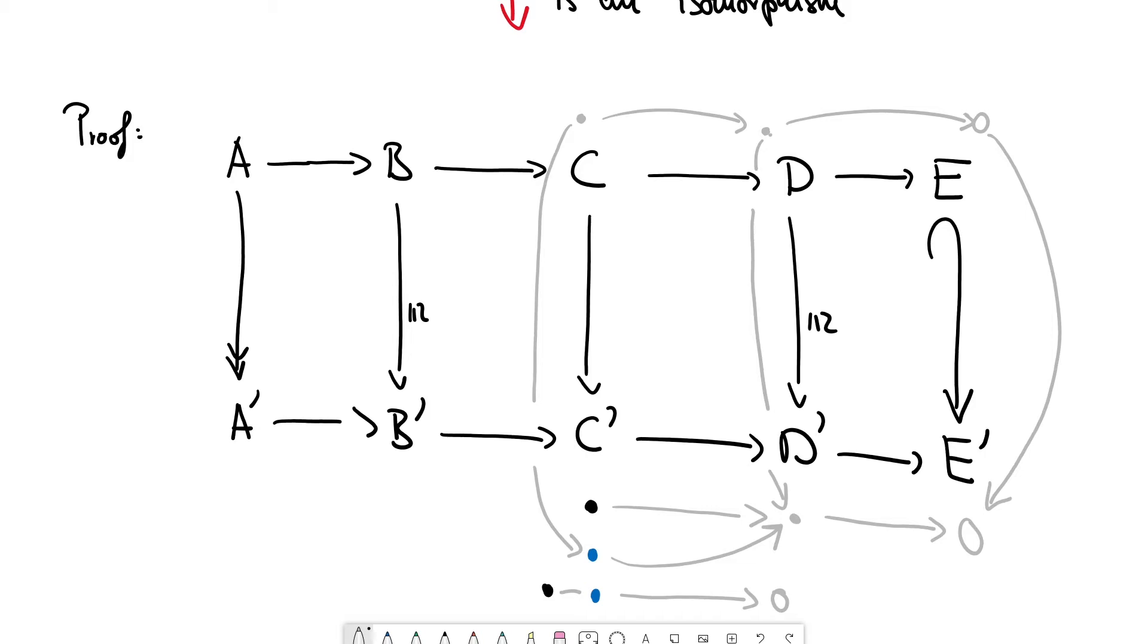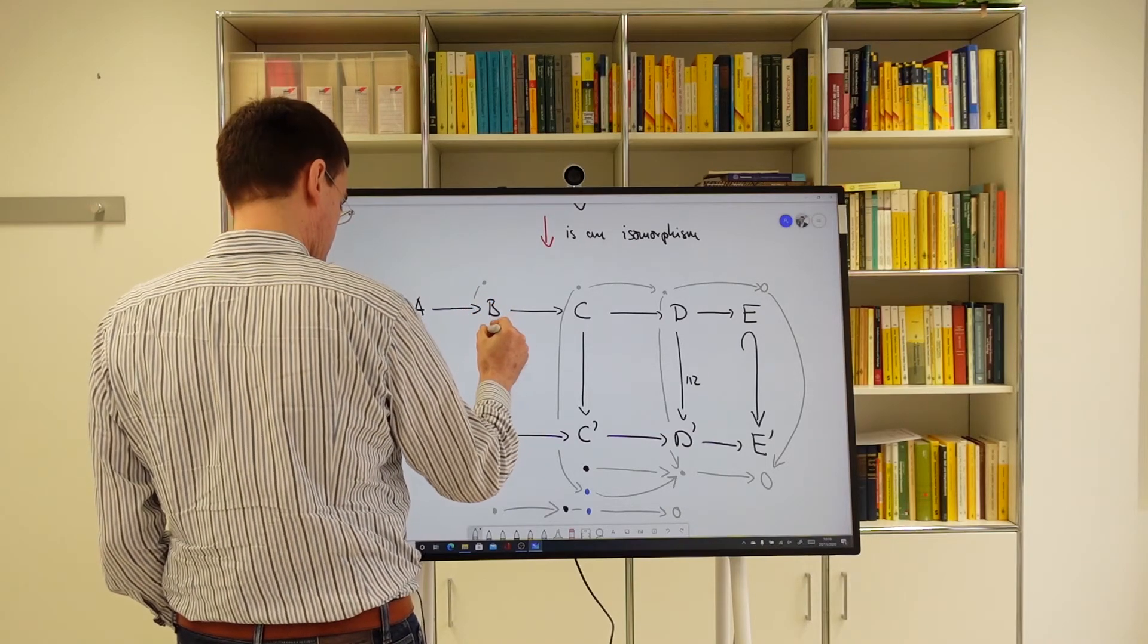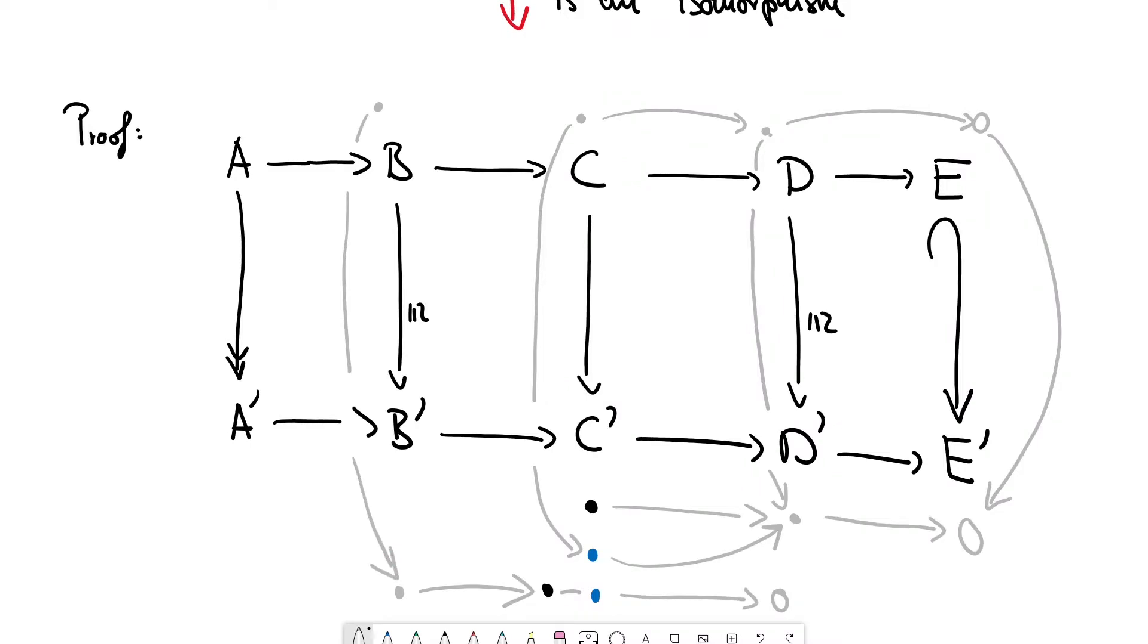And, exactness at C prime gives us an element, or says that there is an element in B prime, that is mapped to the difference element. And for that element in B prime, we can find a pre-image, and there is now a unique pre-image because there is an isomorphism here mapping to this element in B prime.